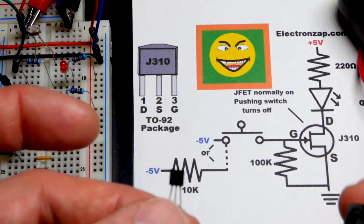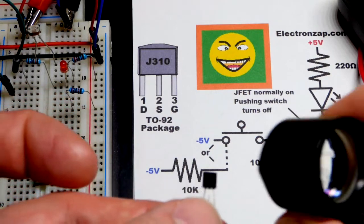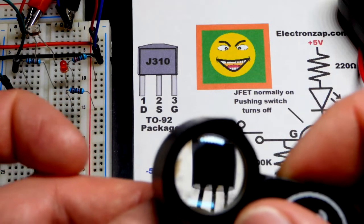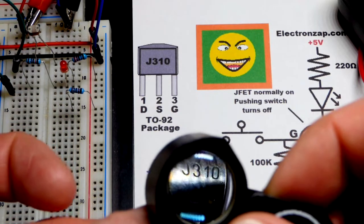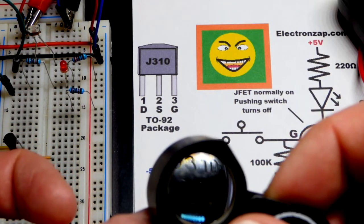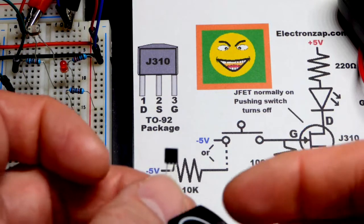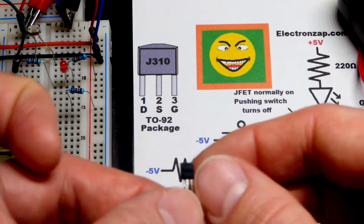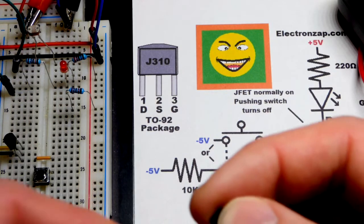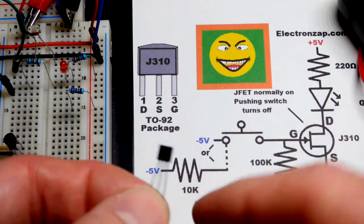So now that brings us to our component, the J310. So this is a depletion mode component, which means that normally it conducts until you turn it off. And we'll talk about that a little bit later.